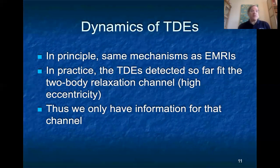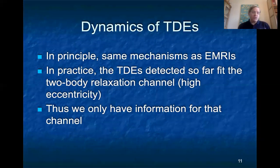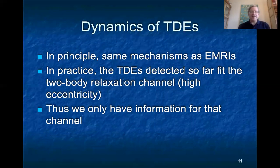The pace of TDE discovery is increasing and each event is studied carefully. There are ambiguities, but so far the ones detected largely fit the two-body relaxation channel — which is the one that would lead to high eccentricity in the LISA band. If so, we currently only have information for that channel, though it also raises the prospect that when we do see EMRIs, we might get truly new dynamical information about the centers of galaxies.